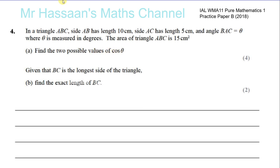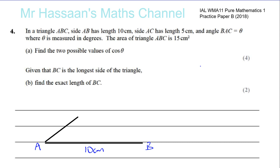Let's look at this type of situation. They have told us AB is 10 and the angle is BAC. Let's call one side A and the other side B — the longer side is 10. Then AC is 5, so AC could be about that length over there. That could be C, making BC the third side. The angle theta would be BAC, which is this angle here.